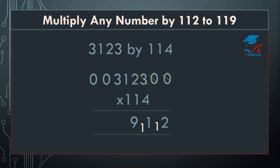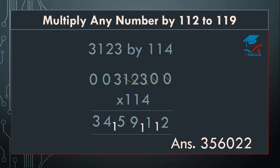Cut 3. 4 threes are 12 plus 1 equals 13, plus 2 equals 15. Write 5, 1 will be carried over. Cut 2. 4 zeros are 0 plus 3 equals 3, plus 1 equals 4. Cut 1. 4 zeros are 0 plus 0 plus 3 equals 3. So this 1 will be added to 4, this 1 will be added to 9, and this 1 will be added to 1. And 1 plus 9 equals 10 — the carry over 1 will be added to 5. So your final answer will become 3, 5, 6, 0, 2, 2.